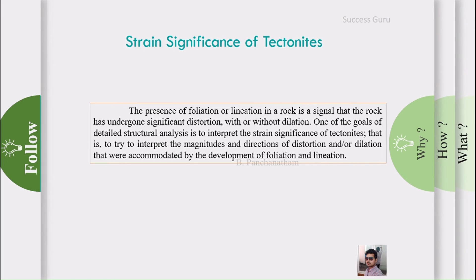The main goal of detailed structural analysis is to interpret the strain significance of a tectonite. For example, lineation has been classified into 13 types, each indicating different stages of formation — what happens at the initial stage and as stress increases. The prime goal is to interpret the magnitude and direction of the distortion and dilation accommodated by the development of foliation and lineation, allowing a structural geologist to determine the type, direction, and magnitude of stress that produced those structures.